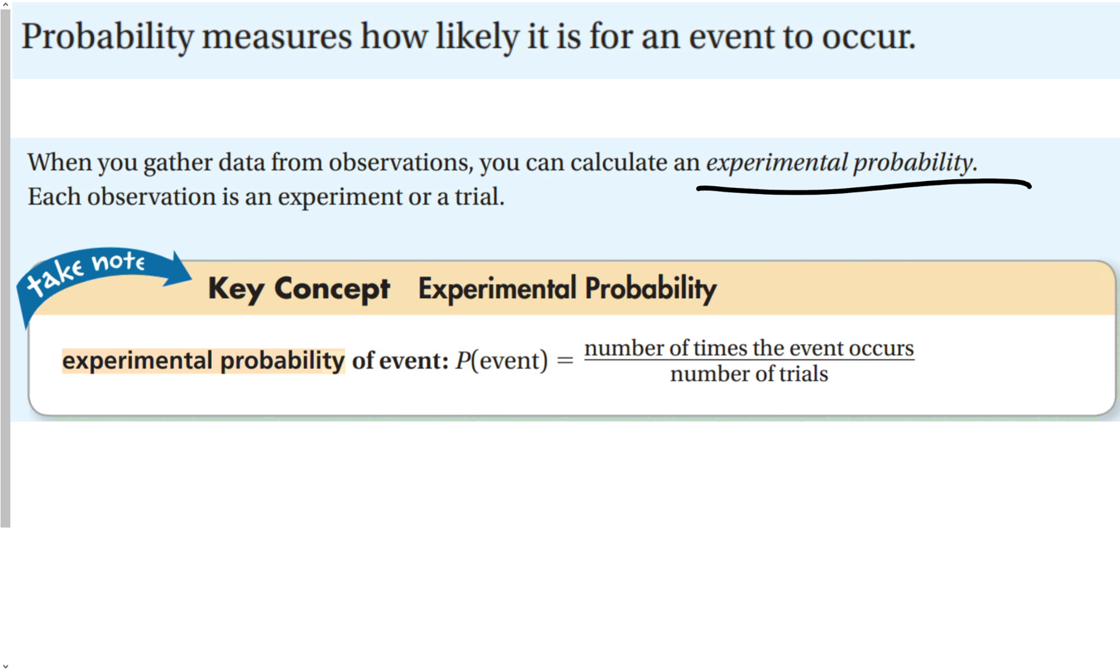So experimental probability, and each observation is the experiment or an actual trial, the number of times you actually did something. And the experimental probability of an event is how many times it happens divided by the total number of trials.